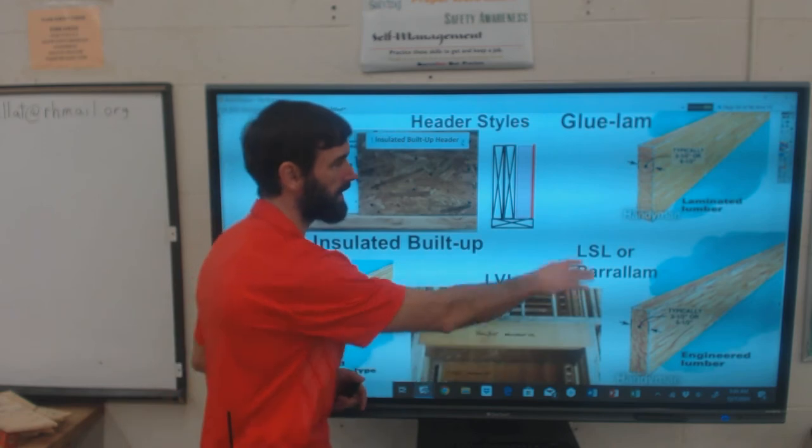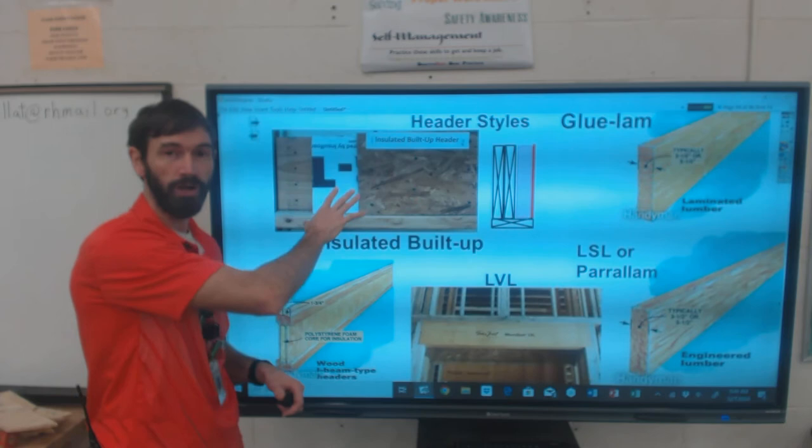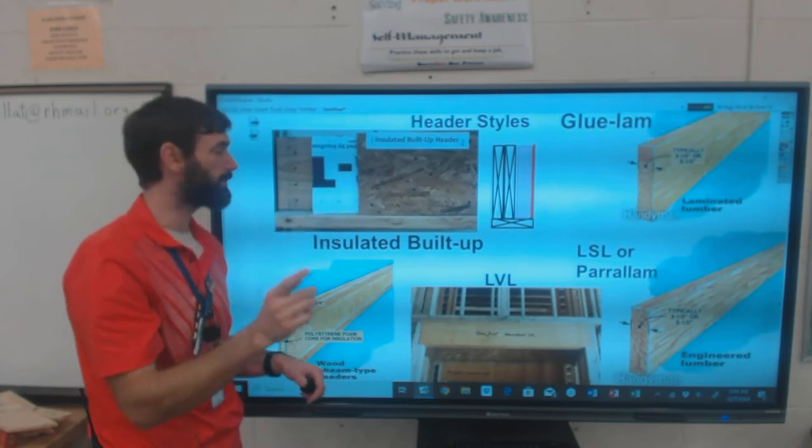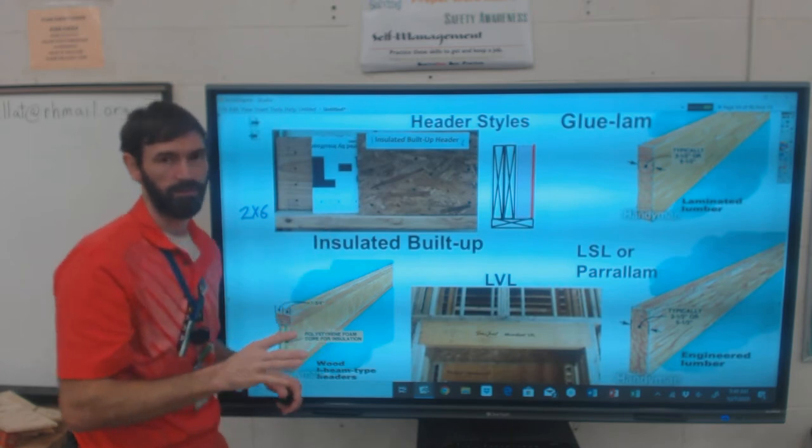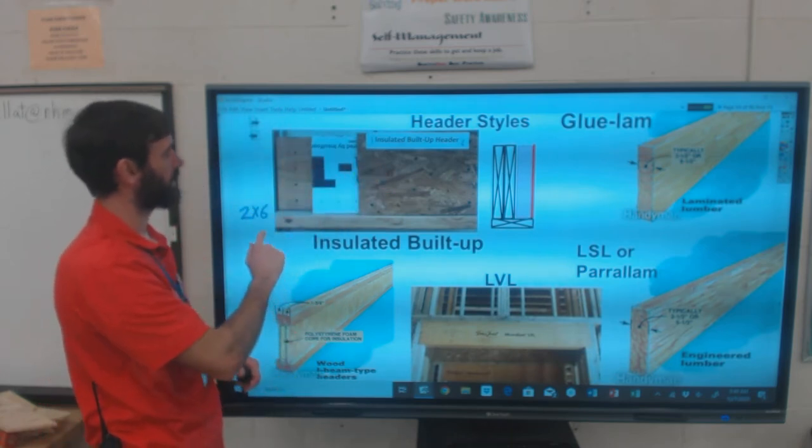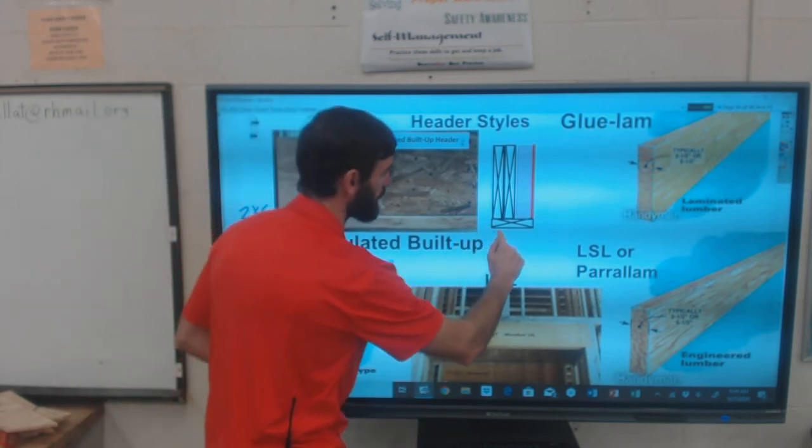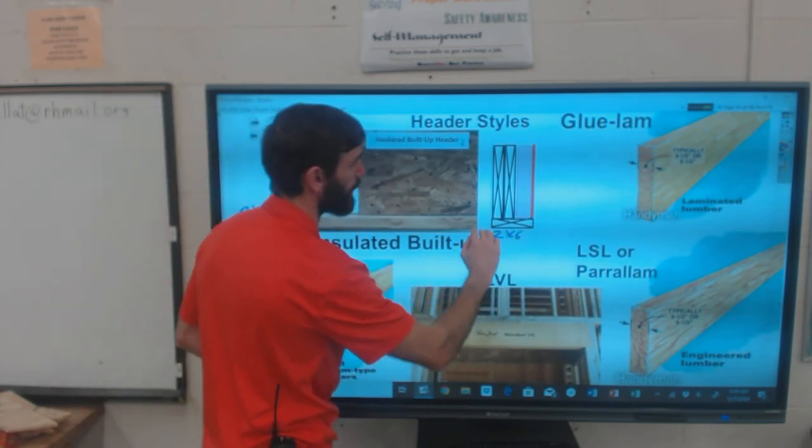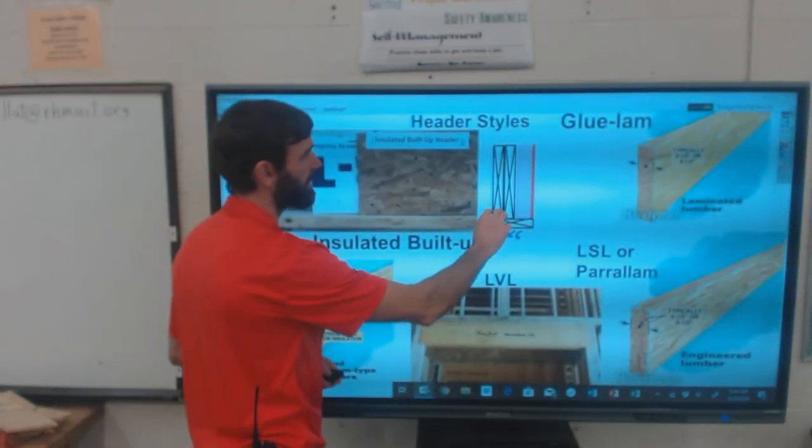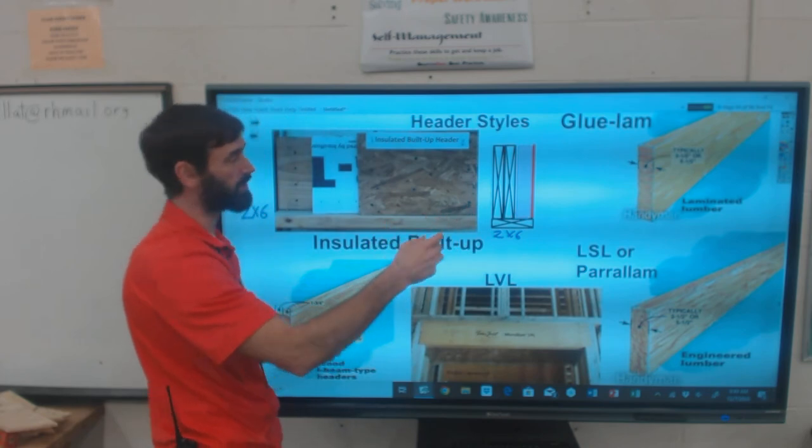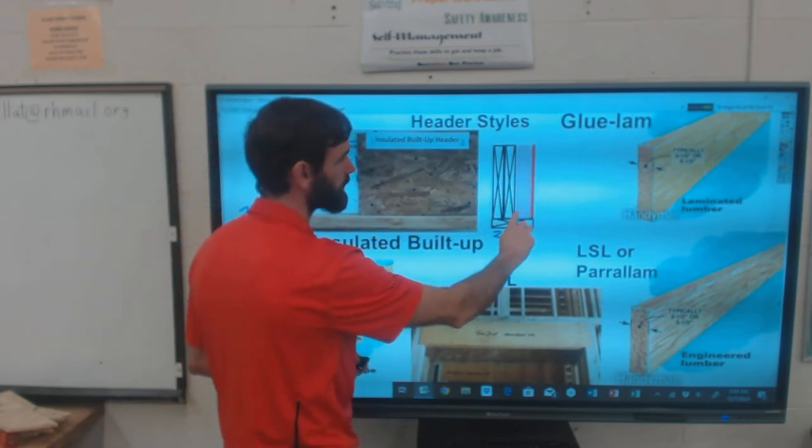If you don't want to spend the money and time on these, you can have a strong header. And if you're using a two-by-six wall, it's got to be a two-by-six, right? Then you can have an insulated built-up header. Here's a two-by-six bottom board, kind of like these box beams. You've got your two two-by-tens or two-by-twelves, then a piece of OSB here.